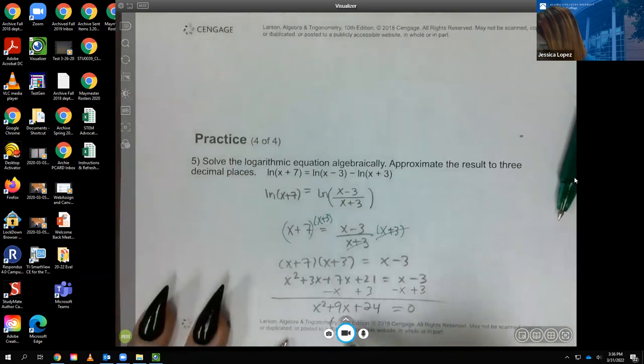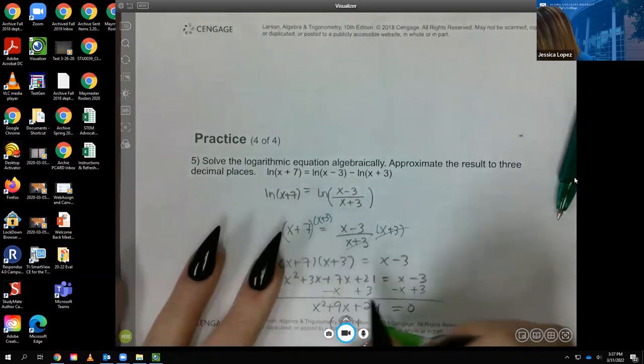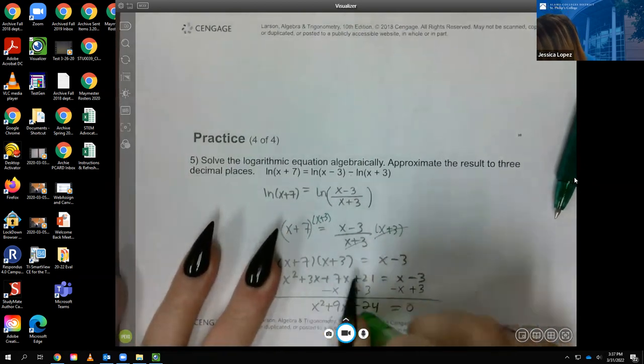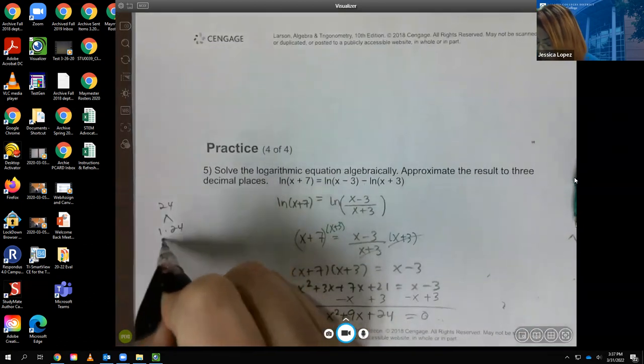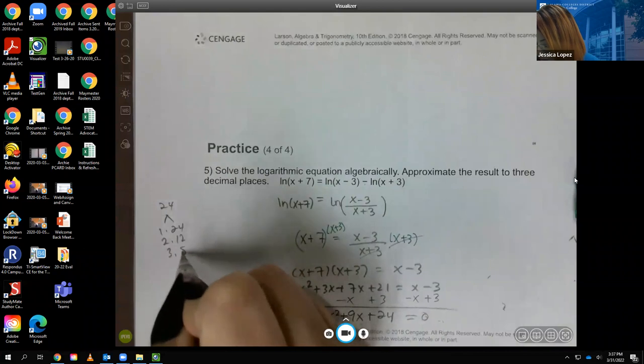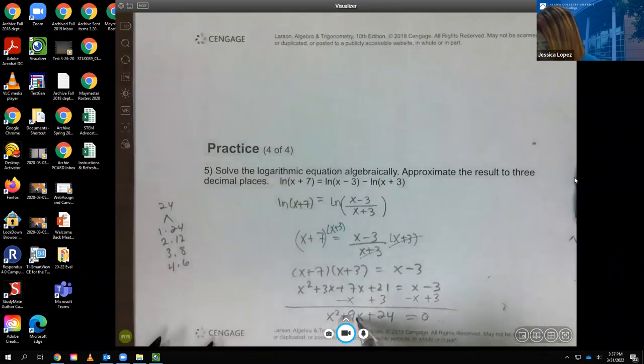So I have x squared plus, or not x squared. Hmm. I don't think I can factor that. Let me see. 24: 1 times 24, 2 times 12, 3 times 8, 4 times 6. And that's it. And none of those are going to give me 9.